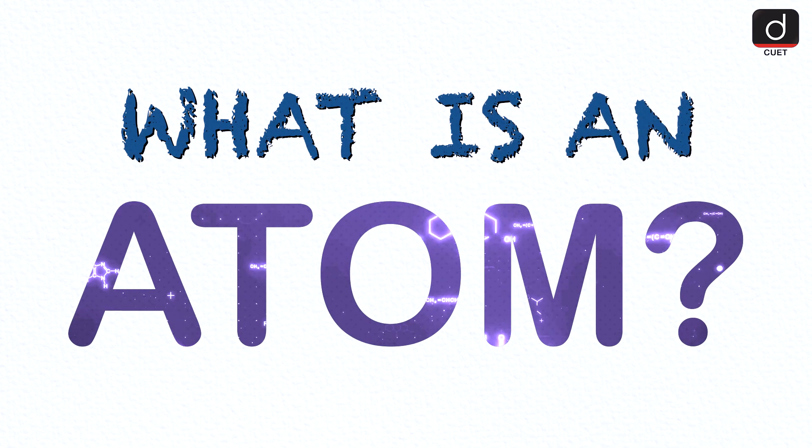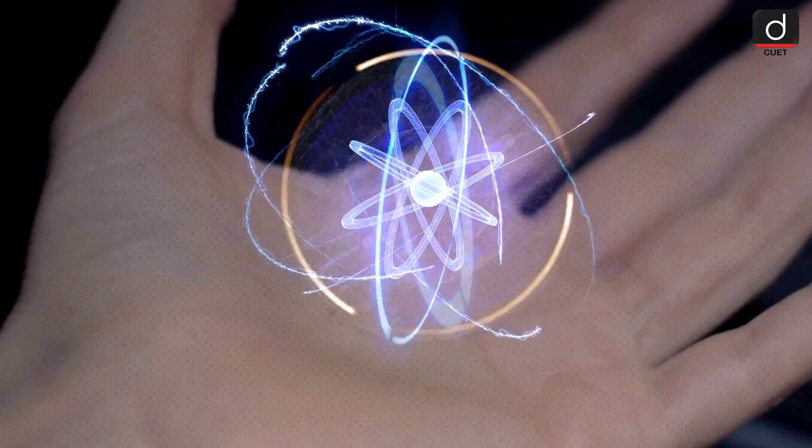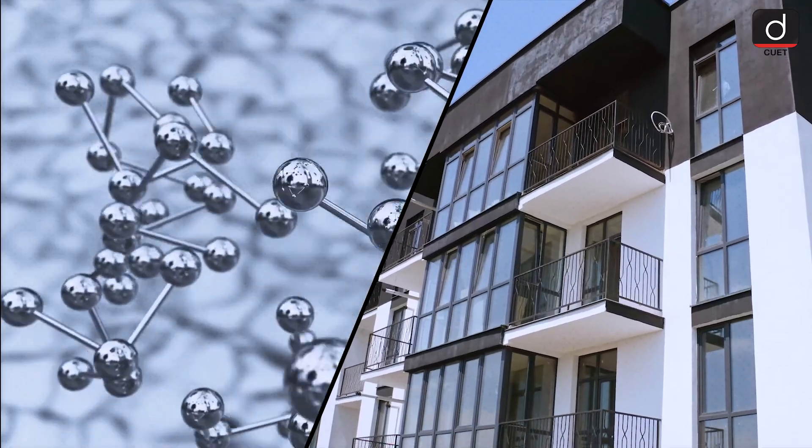What is an atom? An atom is the basic unit of matter, so tiny that you can't see it with your eyes, even under a regular microscope. It's like the foundation of a building, holding everything together.